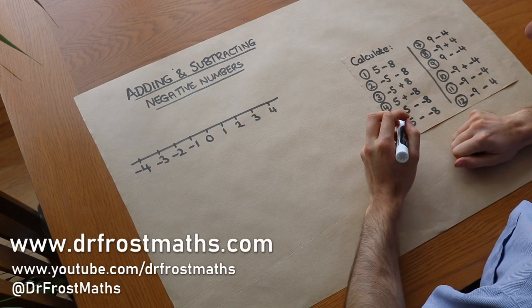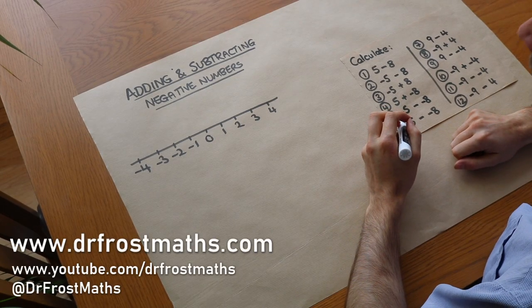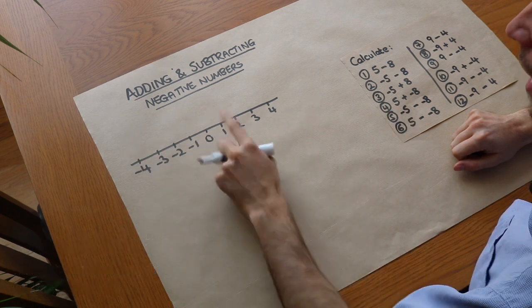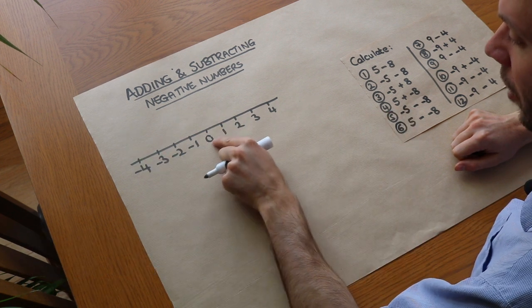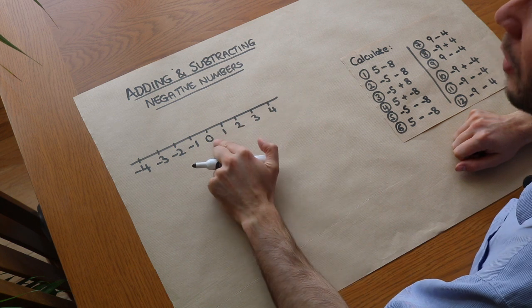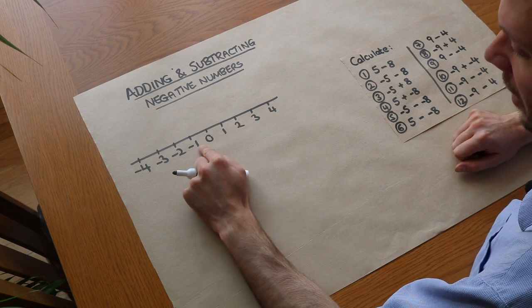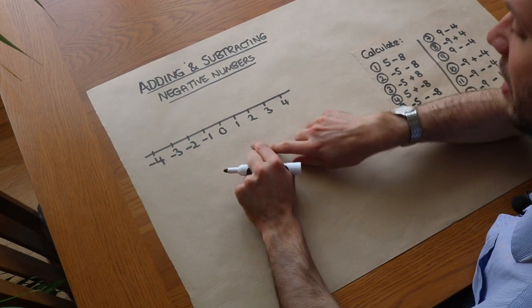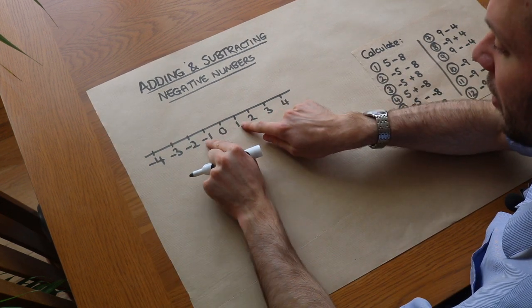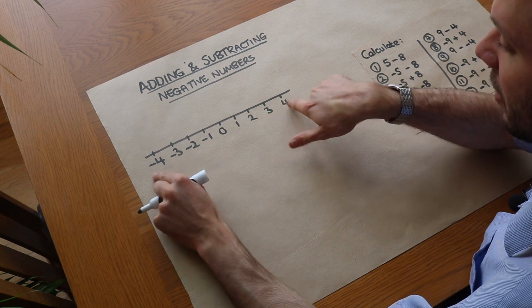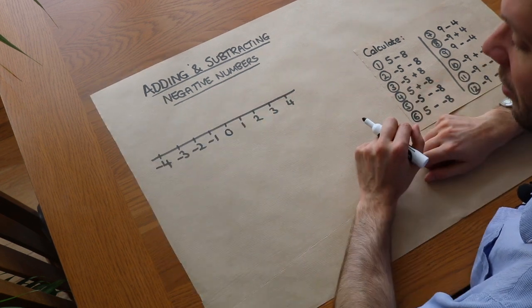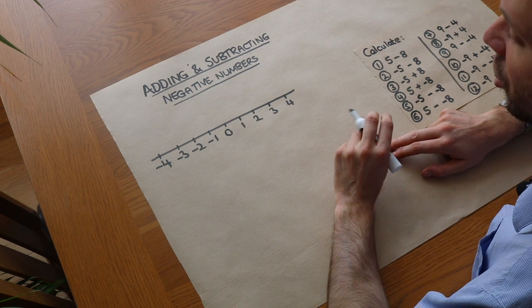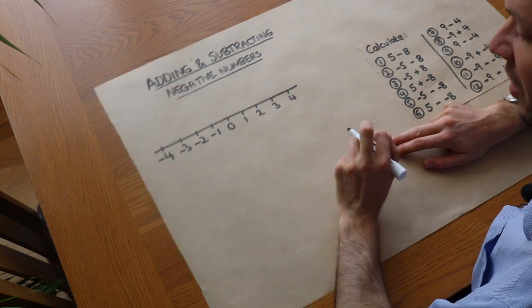Hello and welcome to this video on adding and subtracting negative numbers. In the previous video we looked at the idea of a number line. If we start at zero and go right we're going up one, two, three, four, but we could also go down from zero — minus one, minus two, minus three, minus four. There's a certain symmetry, with ones either side of zero, then twos, threes, symmetrical around zero. When we add and subtract negative numbers we can think about where we're moving on this number line.